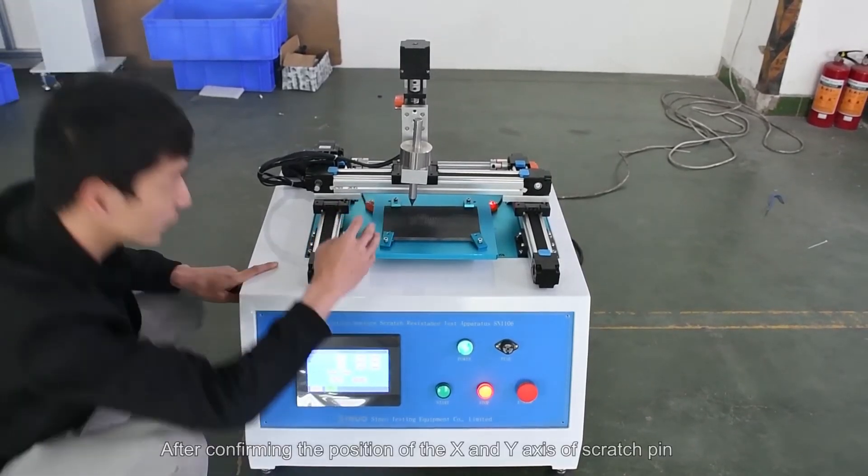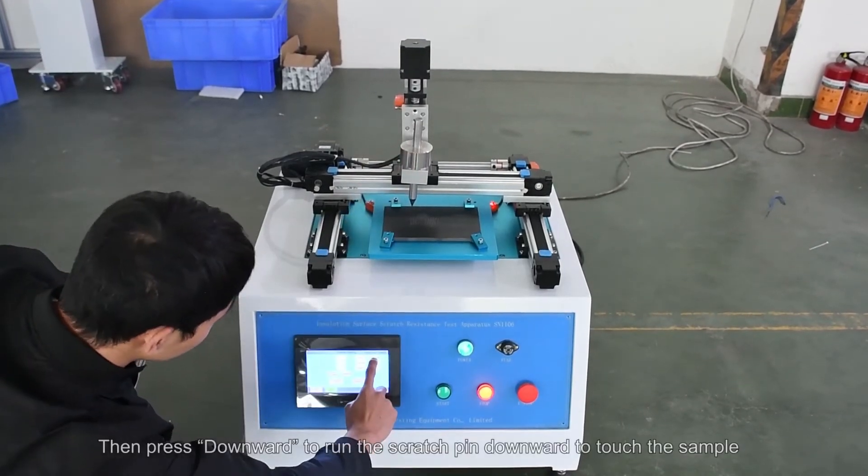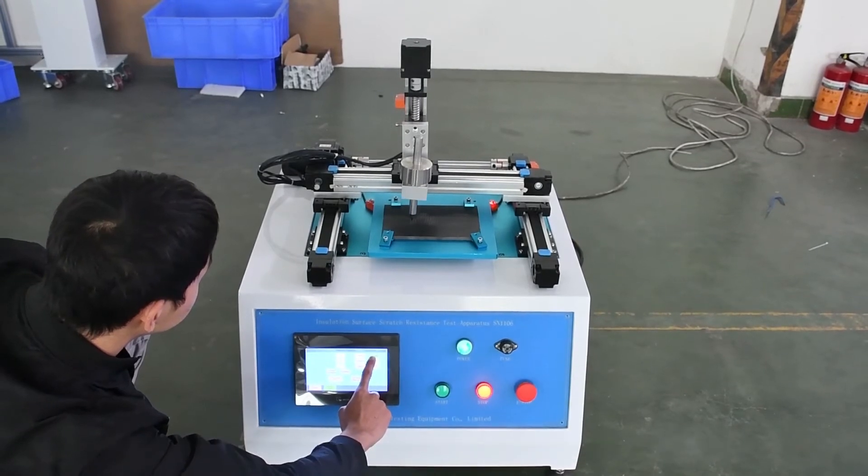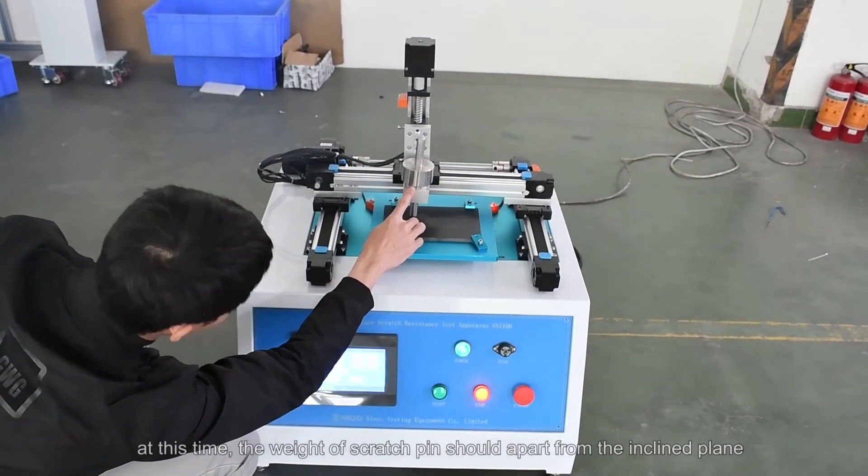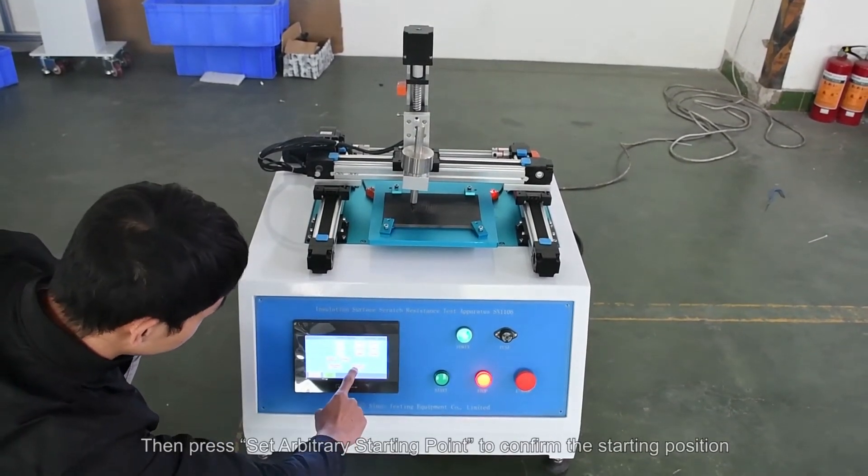After confirming the position of the X and Y axis of scratch pin, then press downward to run the scratch pin downward to touch the sample. At this time, the weight of scratch pin should be apart from the inclined plane. Then press set arbitrary starting point to confirm the starting position.